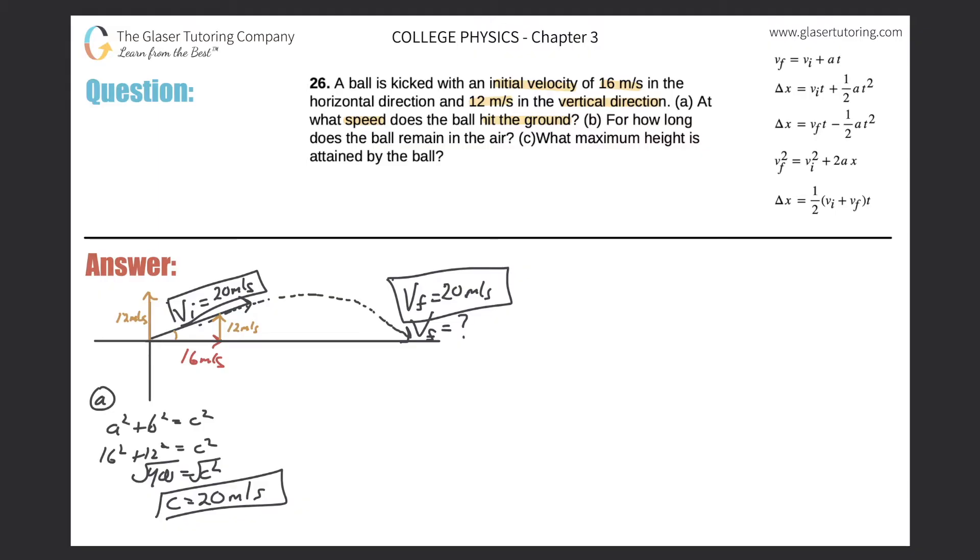Now let's take a look at letter B. Letter B says, how long does the ball remain in the air? Now this question is a little tricky. Remember, in order to solve most of these problems, we're going to have to break things down into the components. They did that for us already. They told us the initial velocity in the x direction is 16, and the initial velocity in the y direction is 12.